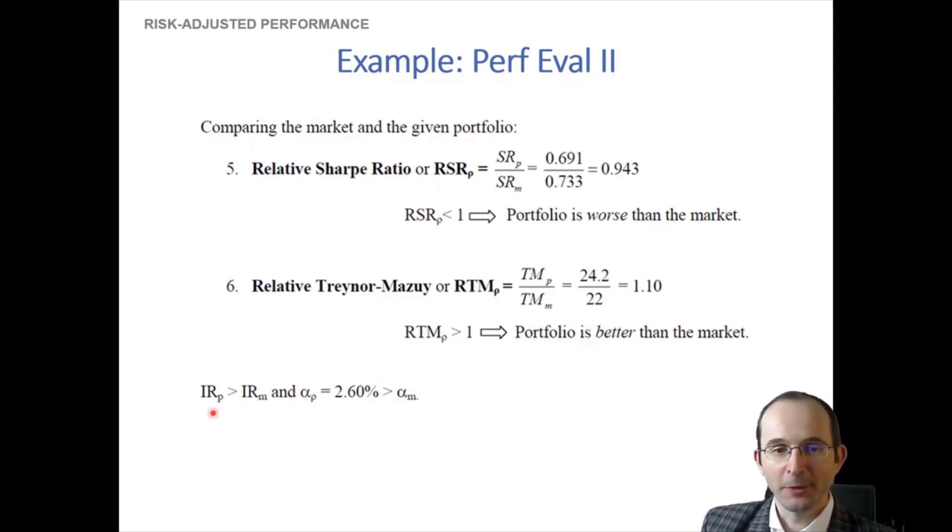And of course, we know that the information ratio for our portfolio is higher than the market's, but then again, that's zero, mostly just due to mathematical reasons. And we know that the alpha is positive as well, but then again, the market alpha is not going to be anything other than zero anyway. But we do know some things that we can now use to make a decision.